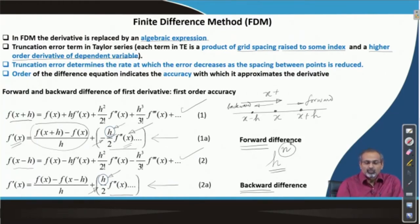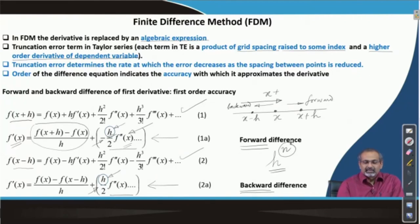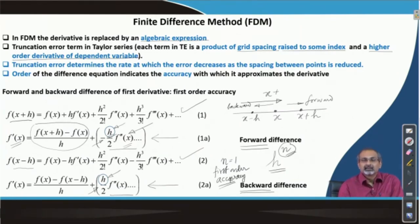We do not know exactly what the contribution of the second derivative of f in the leading truncation error term would be, but we at least know that the index n is equal to 1, giving it first order accuracy. In general, we would like to have larger values of n in order to have higher order of accuracy.